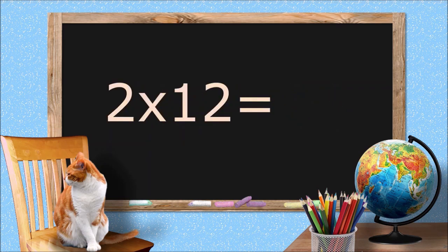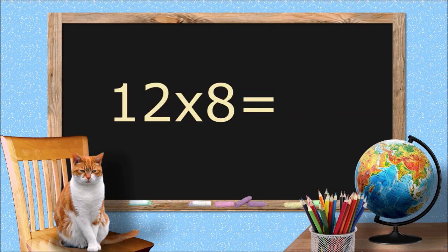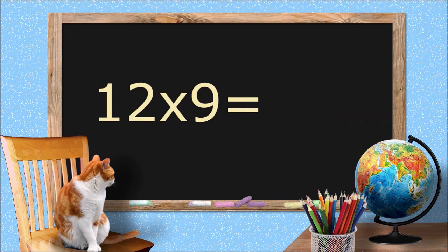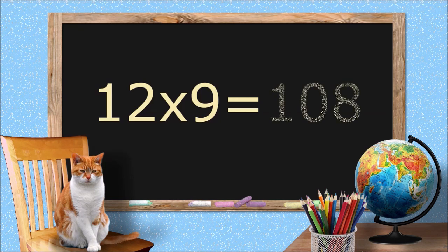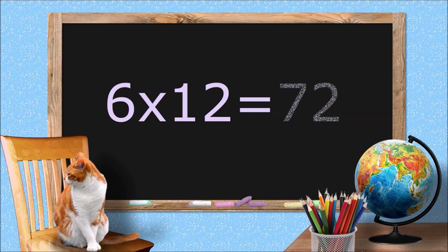2 times 12 equals 24. 12 times 8 equals 96. 12 times 9 equals 108. 6 times 12 equals 72.